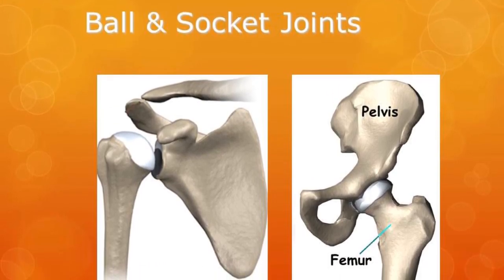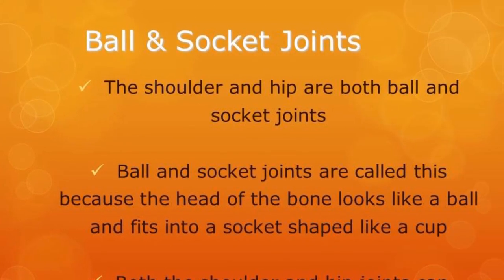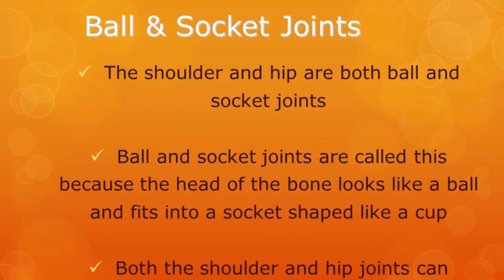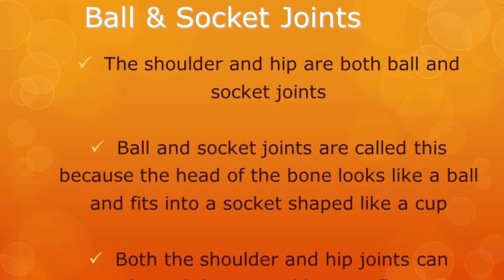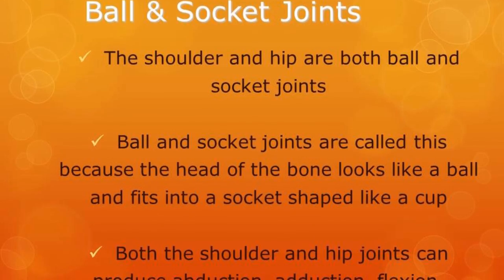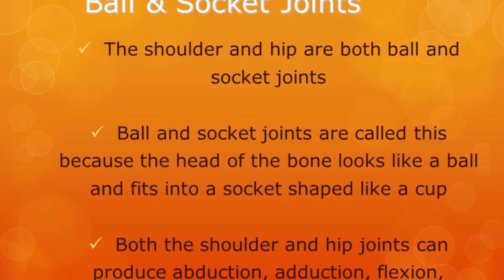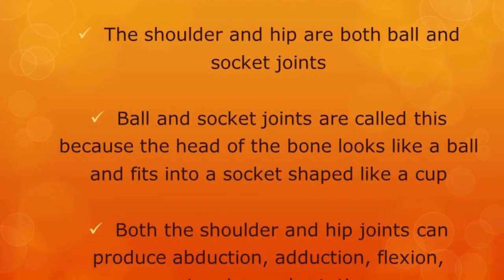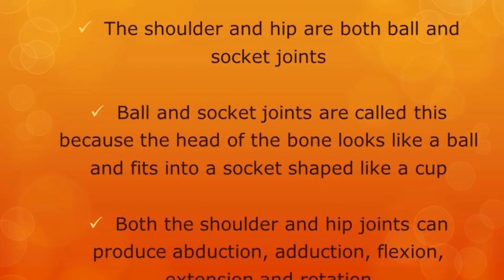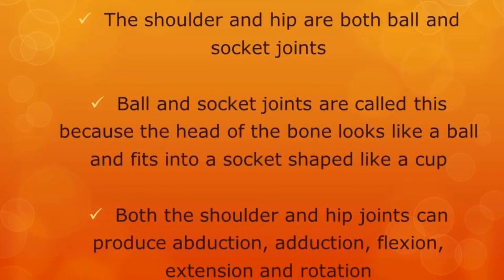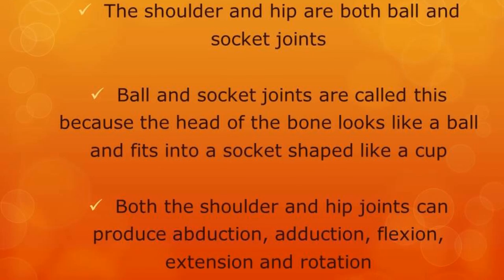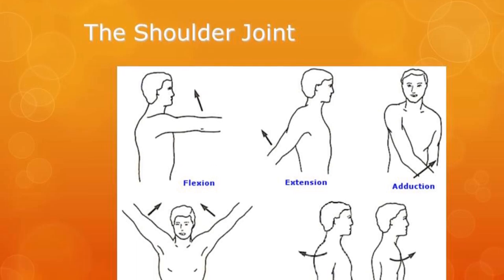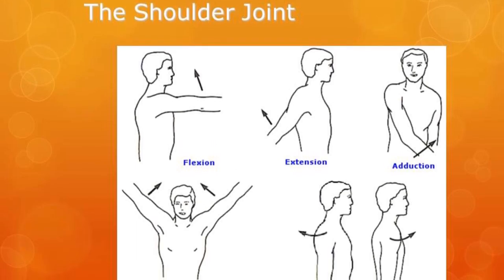The second type of joint you need to know is the ball and socket joint. There are two in our body: the shoulder and the hip. Ball and socket joints are called this because the head of the bone looks like a ball and fits into a socket shaped like a cup. Both the shoulder and the hip joints can produce flexion, extension, adduction, abduction, and rotation. Like hinge joints, ball and socket joints are protected by cartilage. The shoulder joint has more freedom than the hip joint, and for your exam the shoulder joint is the most important one to know.